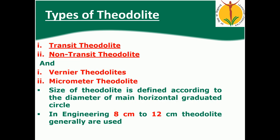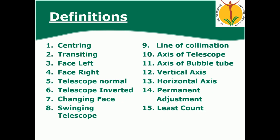Now we are going to see the various types of theodolite. Basically there are two types: first is a transit theodolite and second is a non-transit theodolite, and also vernier theodolite and micrometer theodolite. The size of theodolite is defined according to the diameter of the main horizontal graduated circle. In engineering, 8 centimeter to 12 centimeter theodolites are generally used.